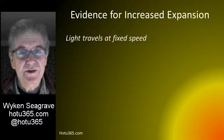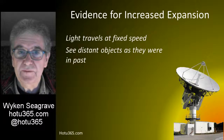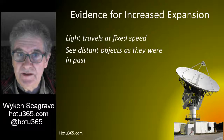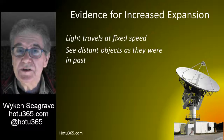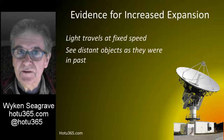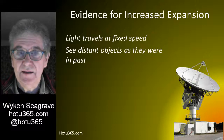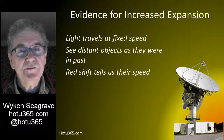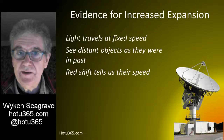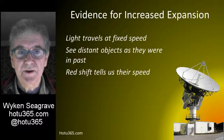We know that light travels at a fixed speed in the universe - this is part of the limitations of space-time. We can use our powerful telescopes to look at distant objects, and therefore the radiation that comes to us from those objects must have started out in the past. The further away they are, the further in the past they were. By measuring the red shift of the light or radiation that comes from these distant objects, we can measure their speed - the speed that they are travelling away from us.